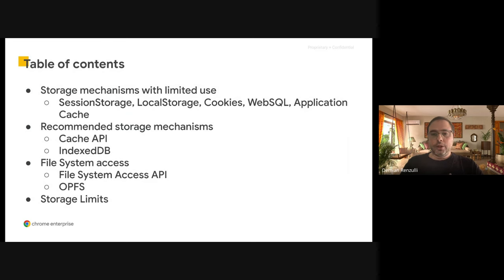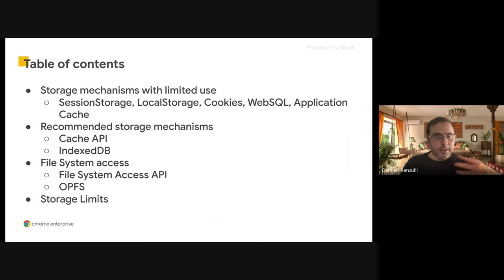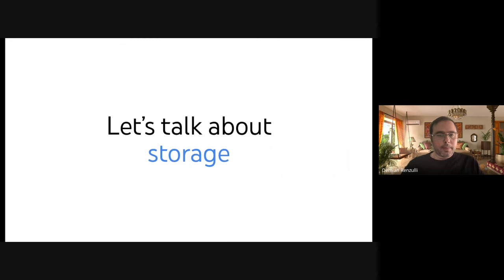This is a summary of the content we will be covering today. We will start with a review of some storage mechanisms that have some limitations but many of you might be using. Then we will cover two of our recommended approaches or technologies. By the end, we are going to look at some of the APIs to access and manage the file system. And finally, I'm going to talk about storage limits — how much you can store in different browsers and specifically in Chrome OS.